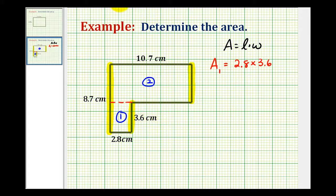So let's go ahead and do that. 8.7 minus 3.6. We'll have one and five. So the length of this side here is 5.1 centimeters.